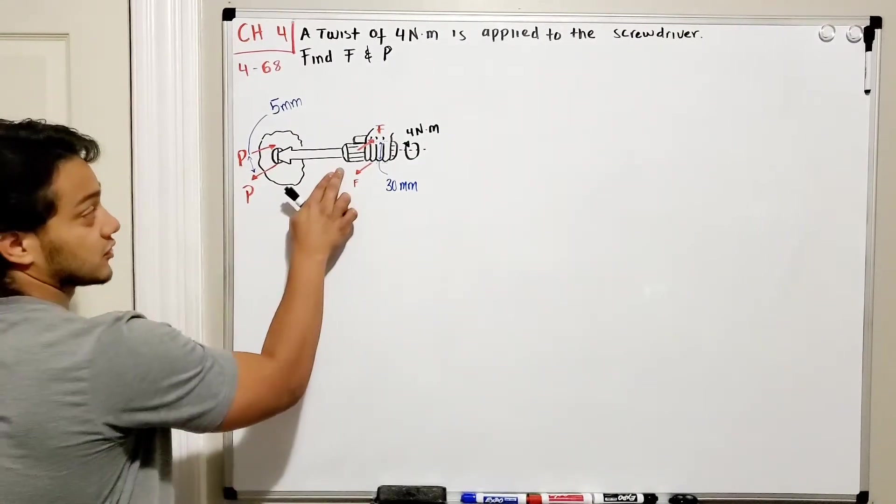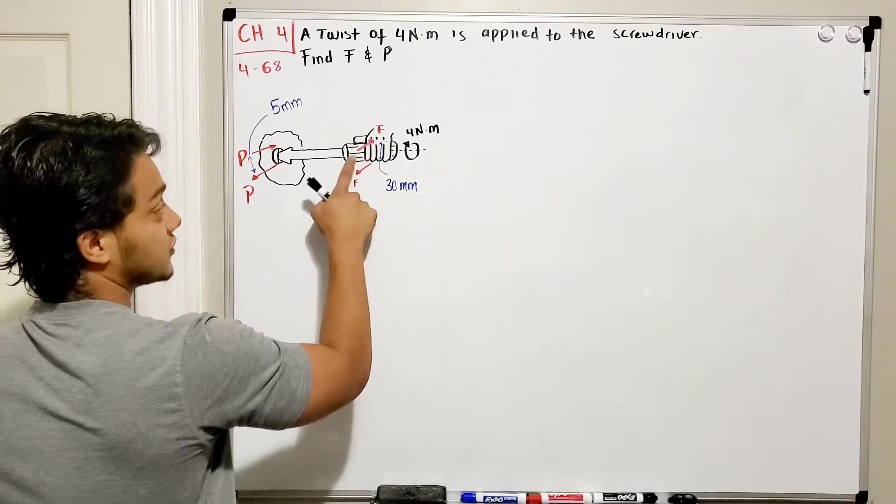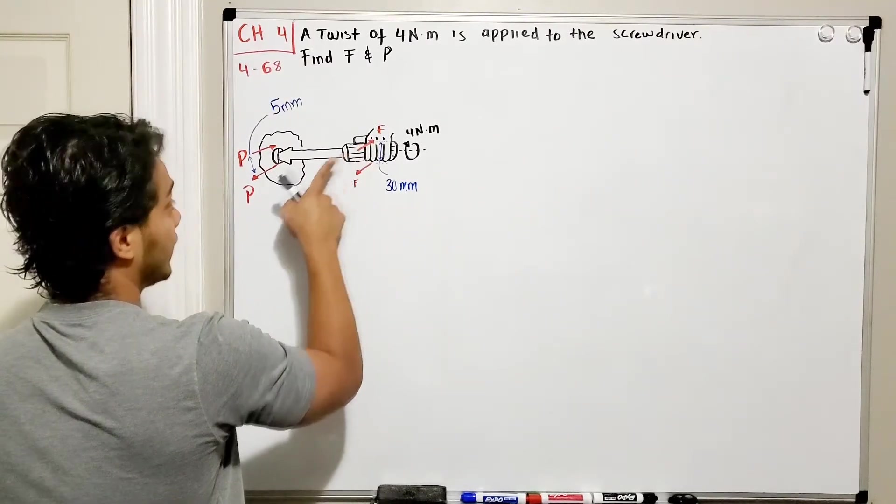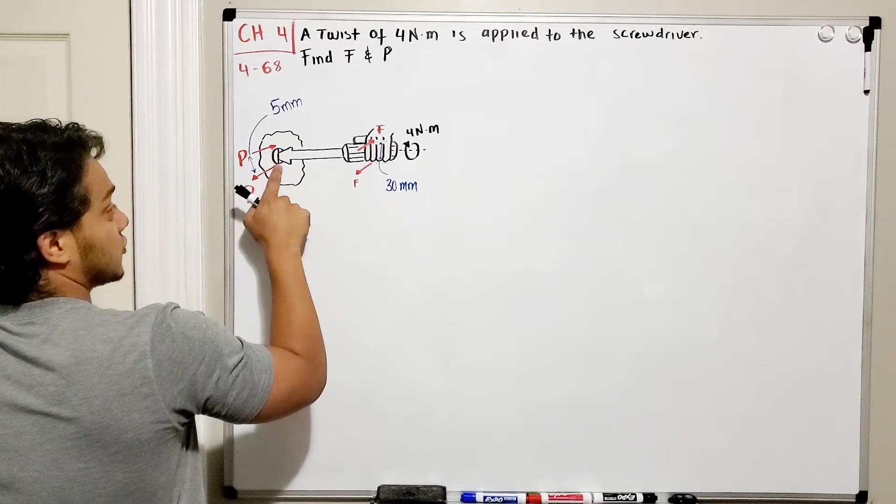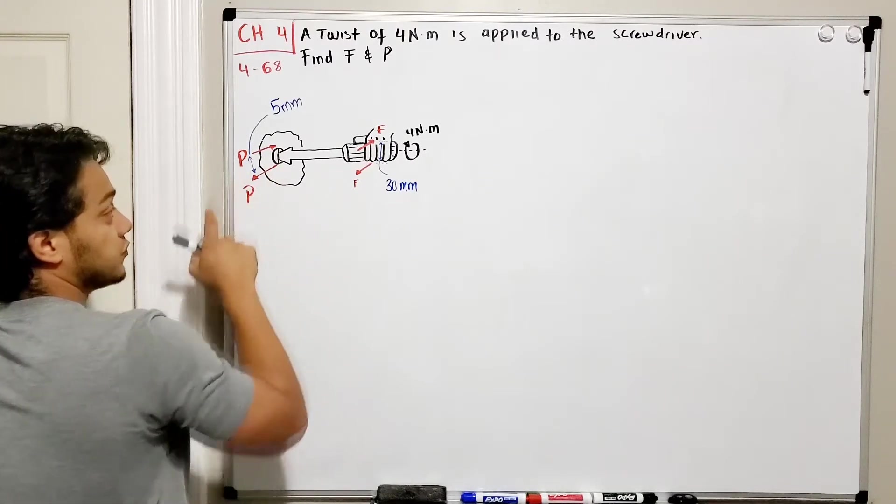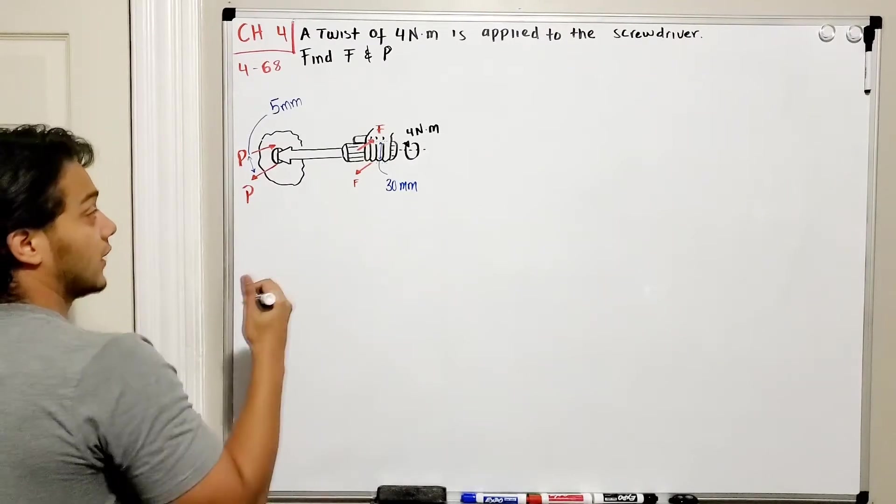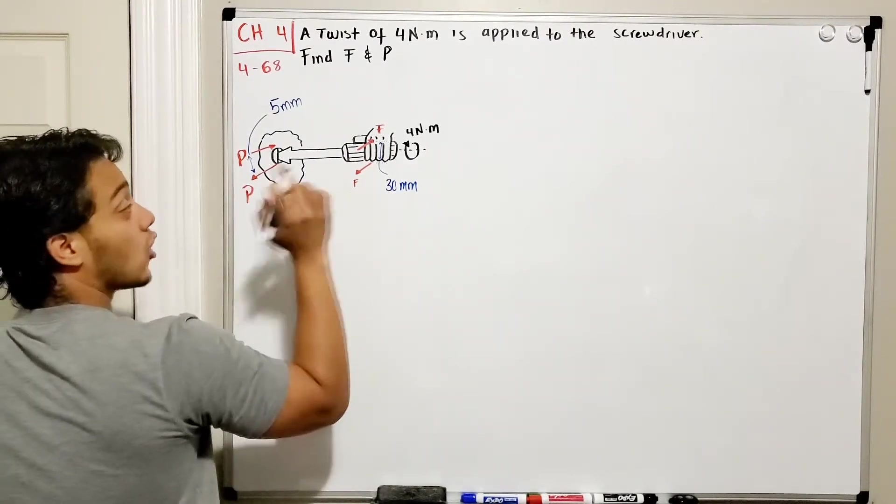So basically this is our screwdriver. We have our hand and this hand is doing a force F, and at the screw we have a force P. So basically we have two moments, or a couple of moments.